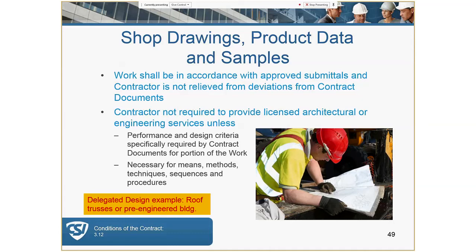There are some instances where the contractor might be required to provide engineering services — for exterior windows or a pre-engineered roof structure, for example. That's typically spelled out in a performance-type specification. Even if the spec does not say it's a performance spec, it might simply list the requirements or parameters to be achieved, with a requirement for signed and sealed engineering drawings. Another example might be a fire-rated joint system or a support system for equipment.